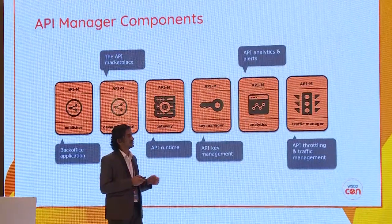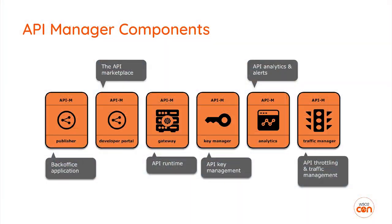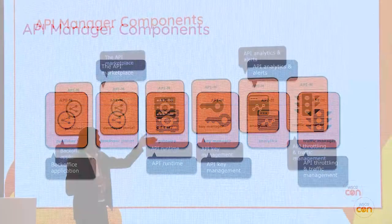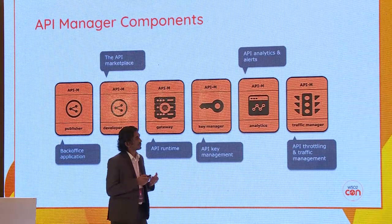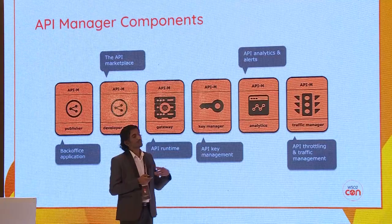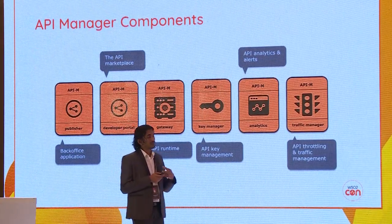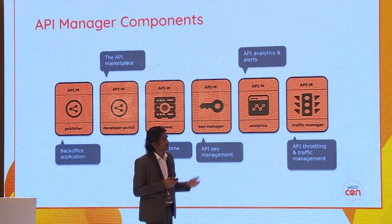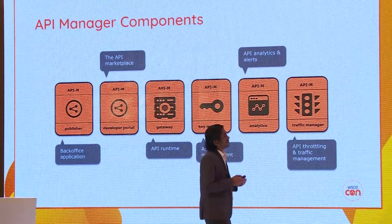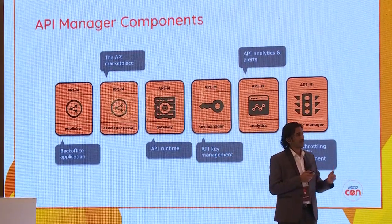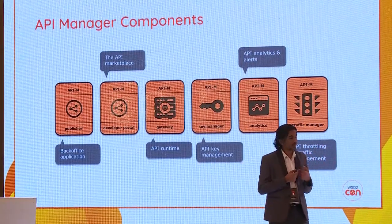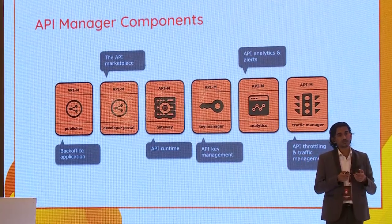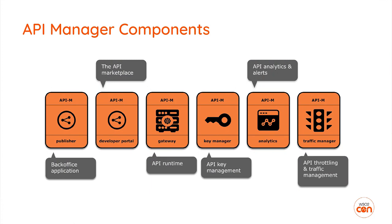Now we'll discuss about the different components. The first component is the API Publisher, which is a back-office application where you go and create APIs. You can point to your backend system and engage different policies and mediation logic. The next component is the API Developer Portal — a place where developers go and subscribe to APIs. For example, if I'm a mobile application developer building a weather prediction app, I will go to the developer portal, search for the APIs I need, and subscribe to start using them.